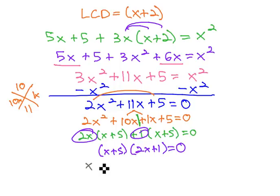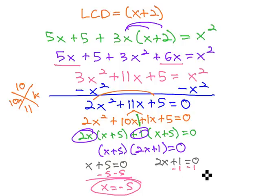Setting each factor equal to 0, x + 5 = 0, and 2x + 1 = 0. We can solve these equations by subtracting 5 to get x = -5, subtracting 1 and dividing by 2 to get x = -1/2, and we have our two solutions.